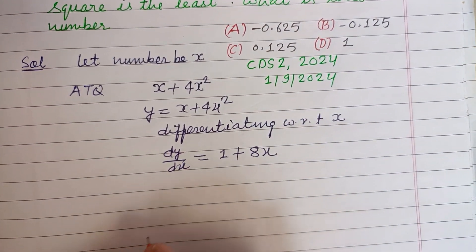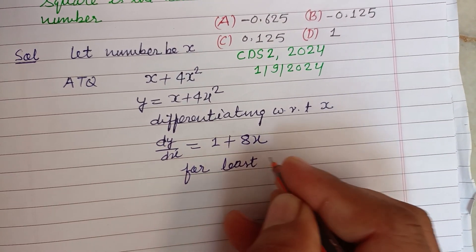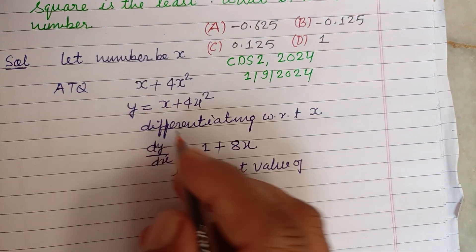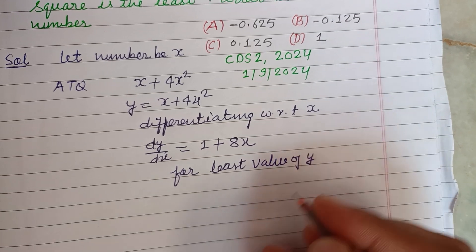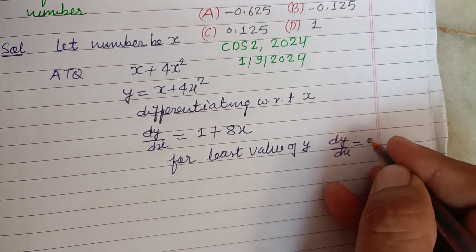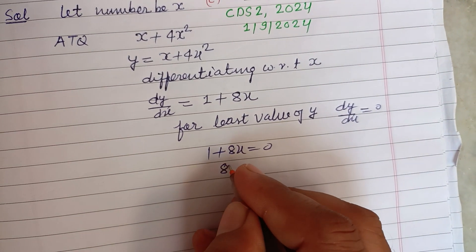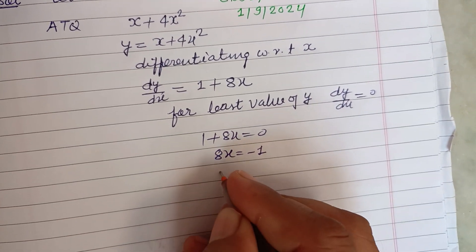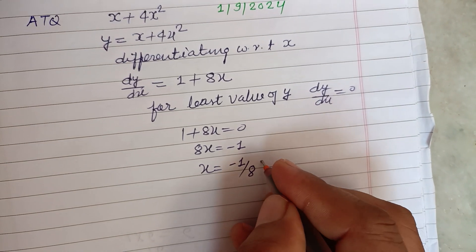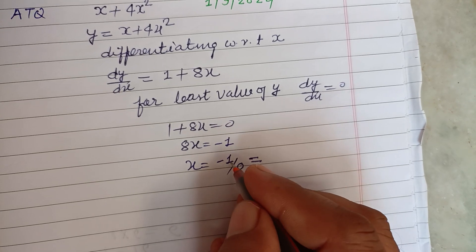For least value of Y, dY/dX equals 0. So 1 plus 8X equals 0, 8X equals minus 1, and X equals minus 1 upon 8.